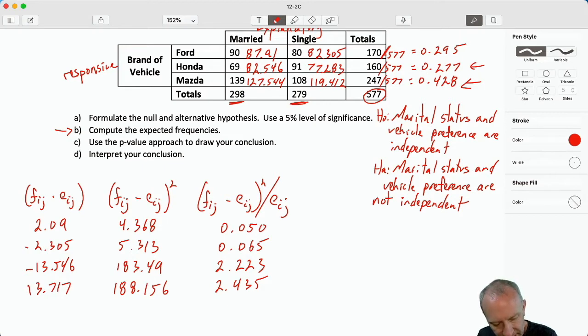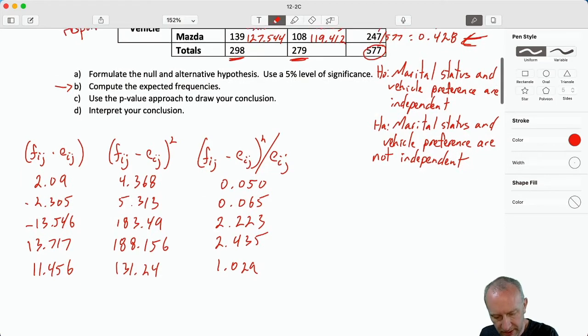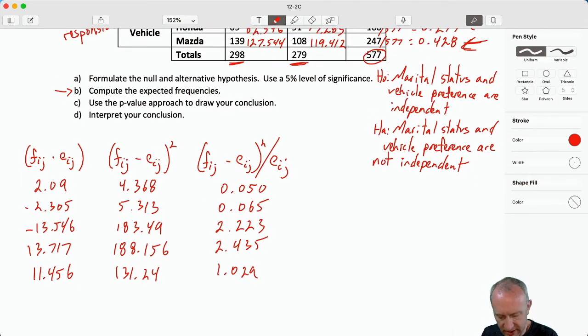Now we're on to Mazda: 139 minus 127, 11.456 squared, divided by 127.544. And our last one, 108 minus 119, squared, divided by 119.412.